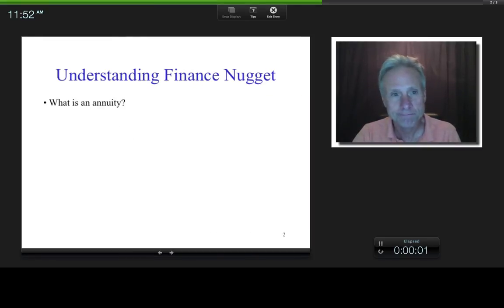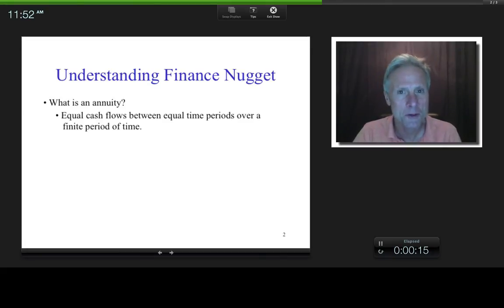So, with that in mind, this is a definition, so either you know it or you don't. It's not really about understanding its definition, it's about just knowing it, right? So, do you happen to know? Well, basically, equal cash flows between equal time periods over a finite period of time. So, for example, if we have a cash flow timeline diagram right here,